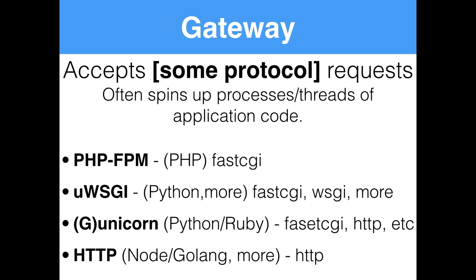If you have an application set up, the web server is probably going to proxy a request off to your gateway. A gateway sits between a web server and your application code, and its job is to convert a web request into something your code can read. In PHP land, we have PHP-FPM — that's the thing that is up and running and listening for requests from a web server. It doesn't read HTTP directly, so Nginx has to convert that web request into FastCGI, which is what PHP-FPM is looking for. Nginx takes the web request, fills out the information needed for FastCGI, and passes it off to PHP-FPM. PHP-FPM then spins up processes — instances of your application code — reads your PHP code, and responds.